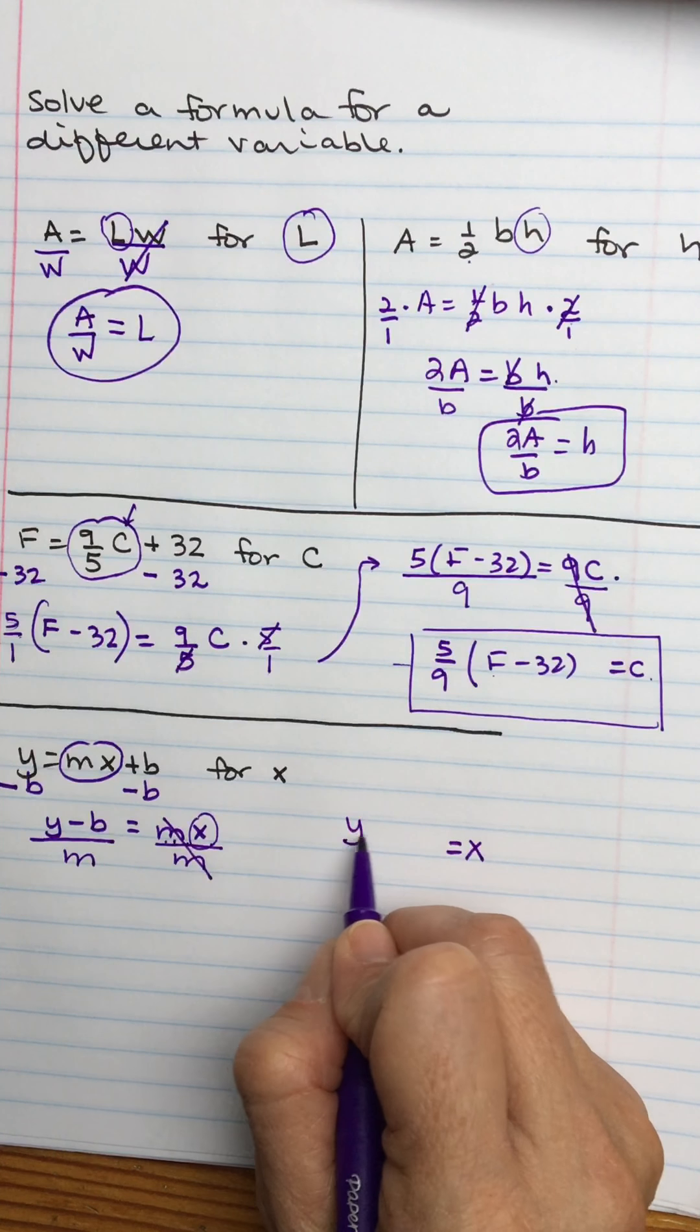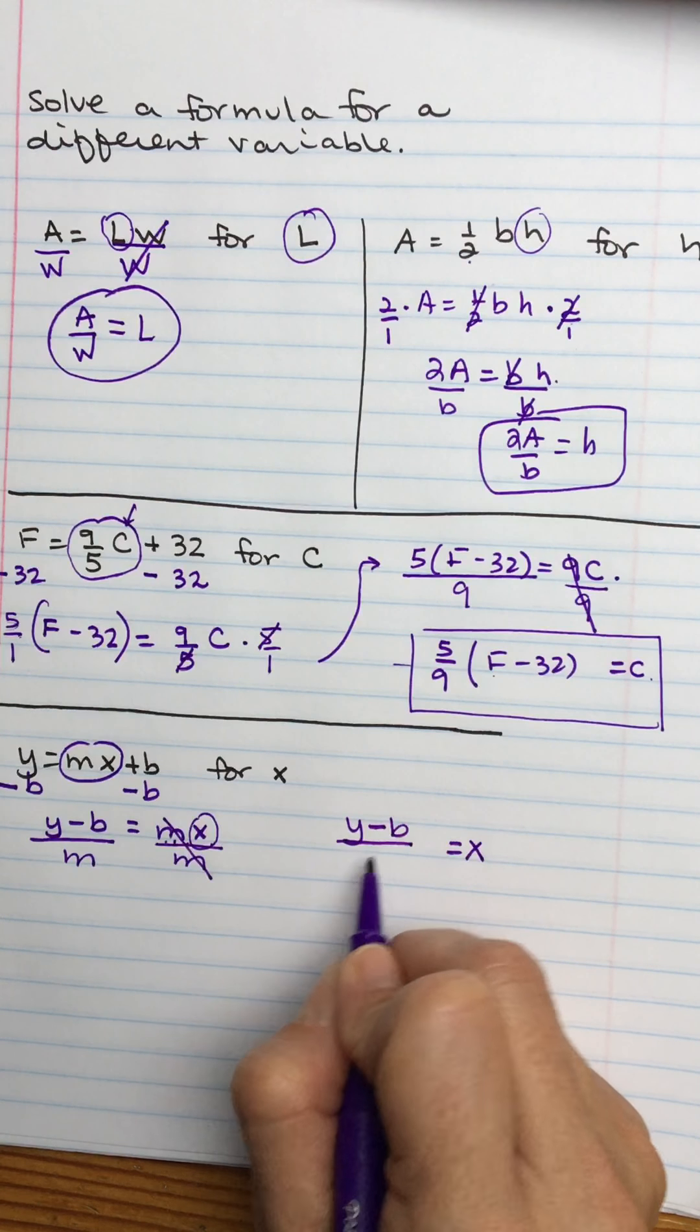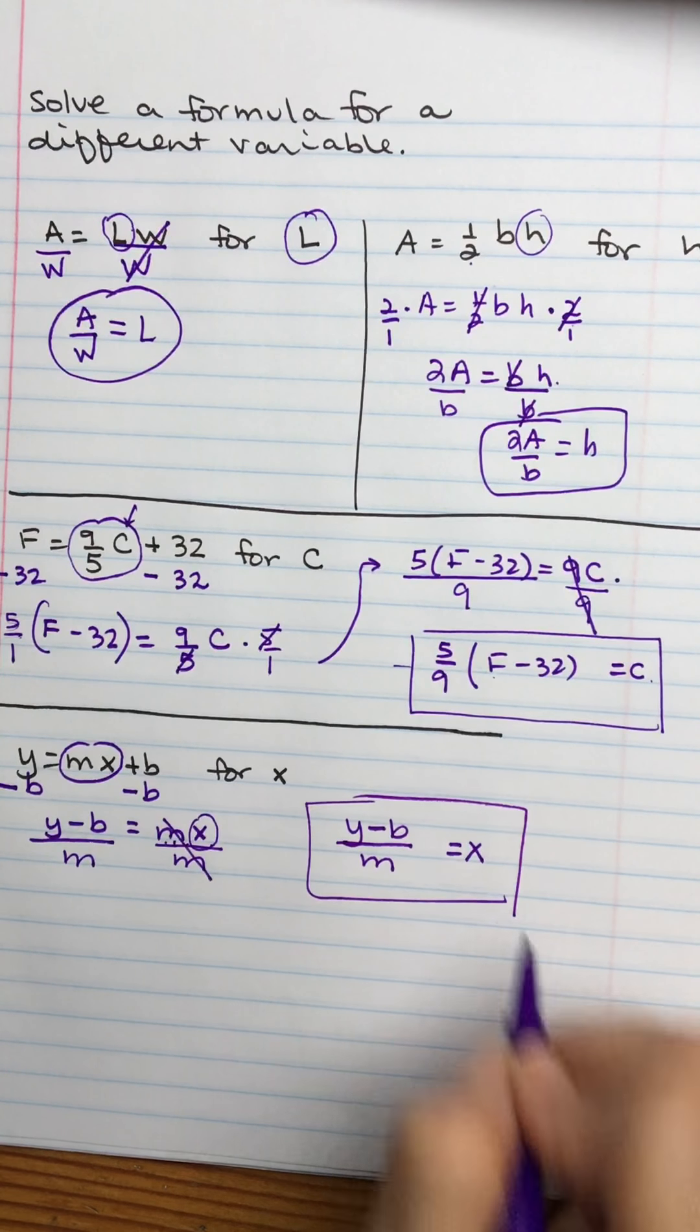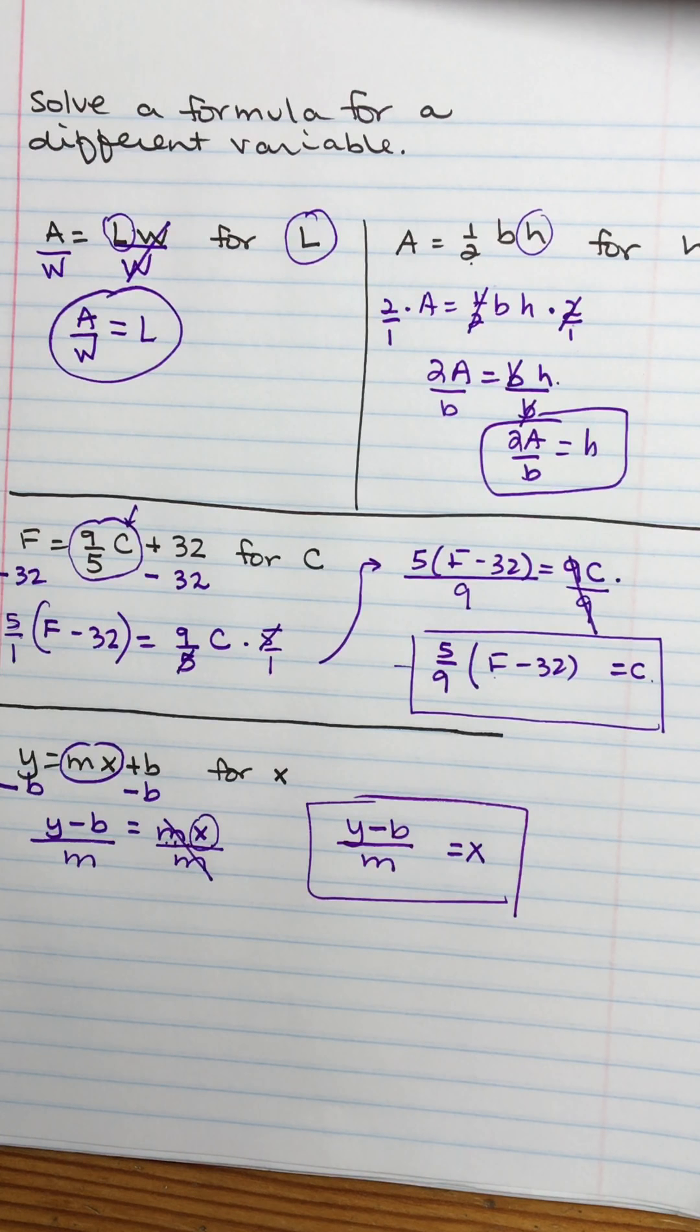So divide both sides by m, and they will cancel. So now I have my x by itself equals y minus b over m.